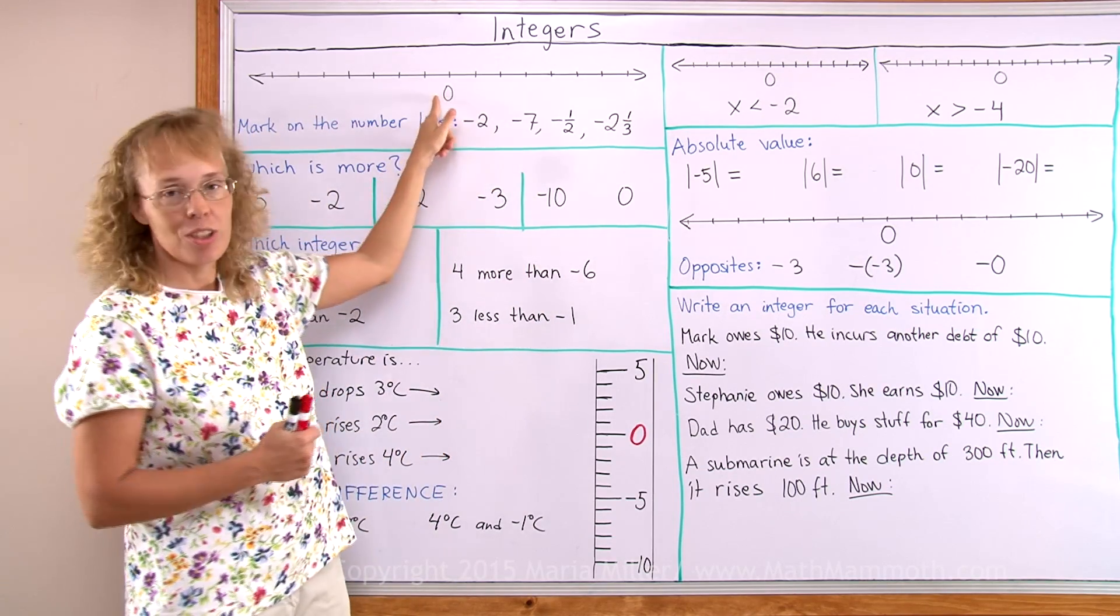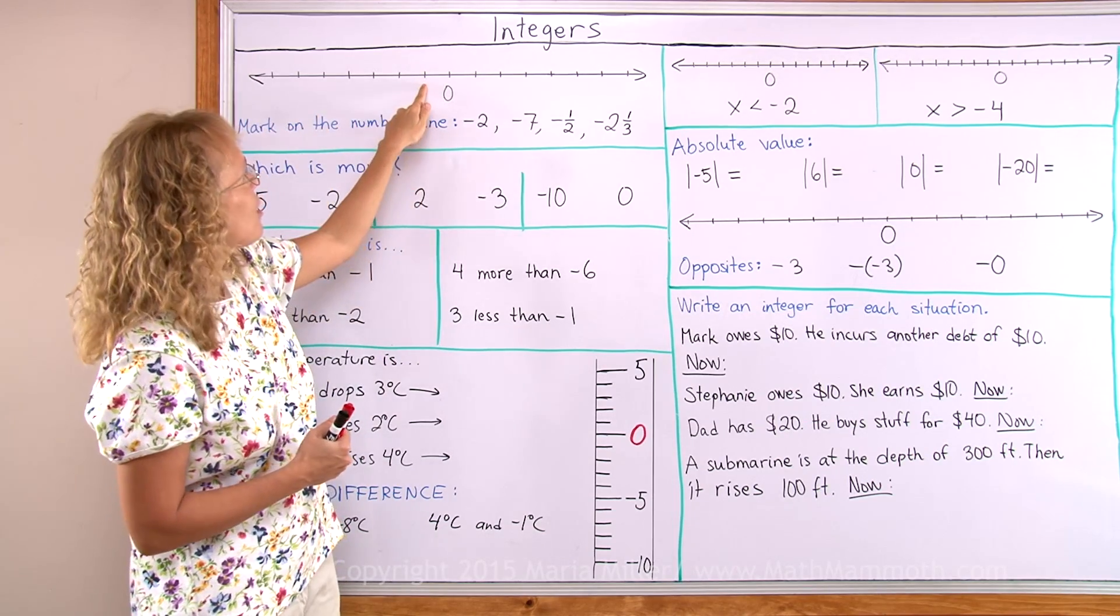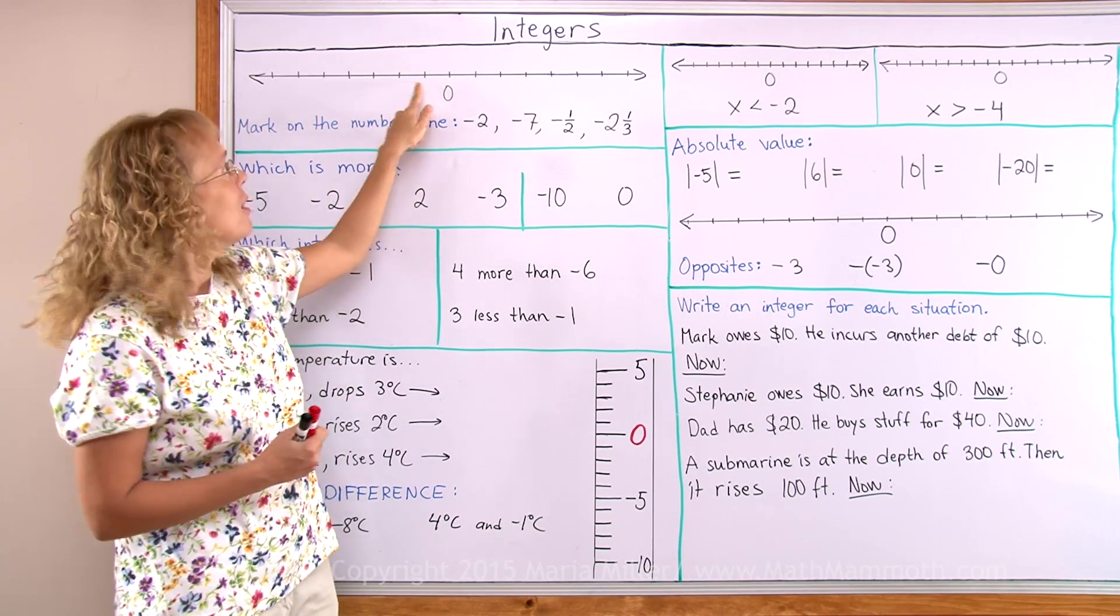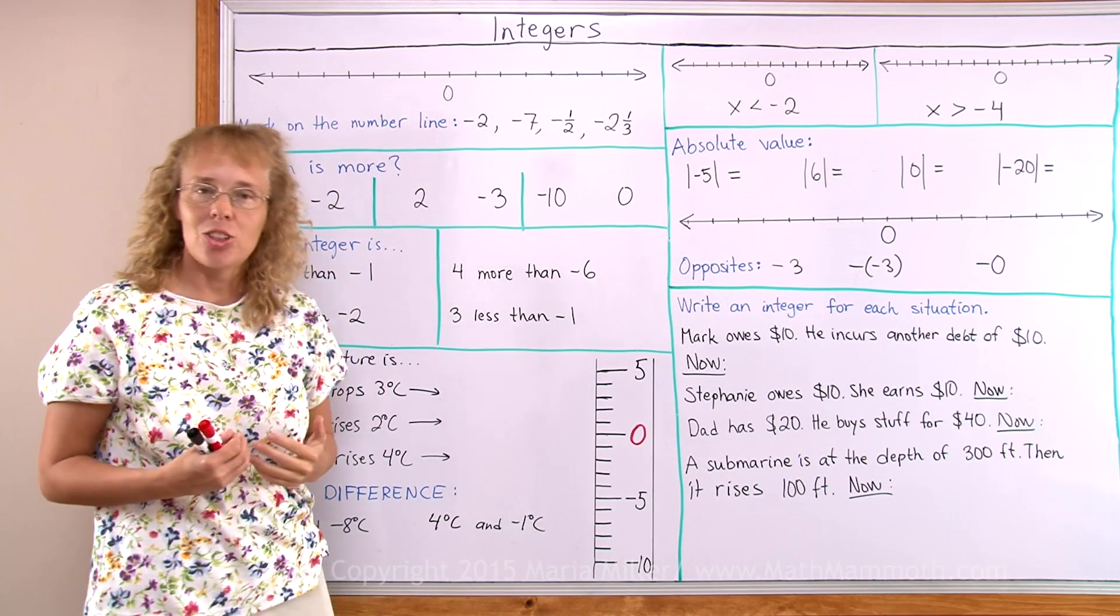But also when we continue from zero towards the left, these numbers here - this would be negative 1, negative 2, negative 3 and so on. These numbers also are integers.